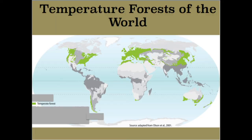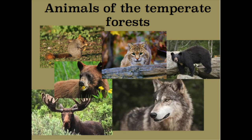Here's a map to show you where to find temperate forests of the world. Look at the green areas — there's some in North America, Europe, Asia, and a little bit in Australia, South America, and Africa. Here are some animals of the temperate forest: squirrels, bobcats, brown bears, black bears, timber wolves, and moose.